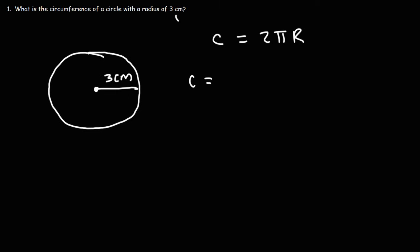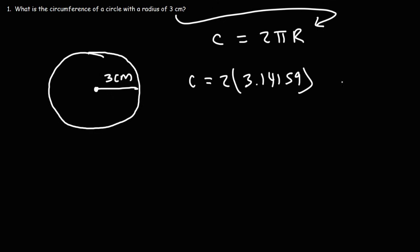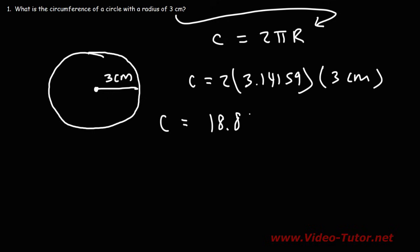All we need to do is plug in r into this formula and we're going to get the answer. So it's 2 times pi. For pi, I'm going to use the value 3.14159, times the radius of the circle, which is 3 centimeters. So 2 times 3.14159 times 3 is approximately 18.85.